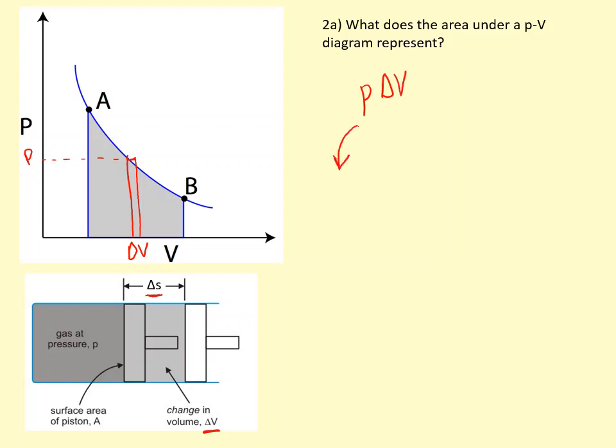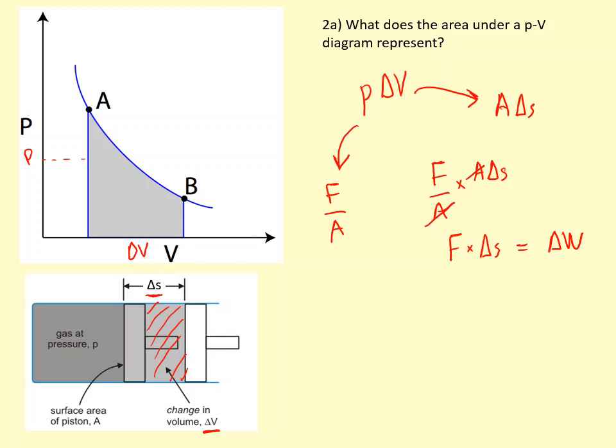Now, pressure is force over area. And the change in volume, as you can see in this case, is going to be the cross-section area times the change in distance. That's the volume there. If I substitute those in, I get P, instead of P, I get F over A times A delta S. The A's cancel out, and I get F times delta S, which is the force times the distance you moved in the direction of the force, which is the definition of work done. So the area on this graph here represents the work done when you compress or expand the gas.